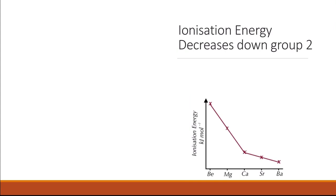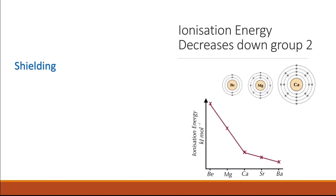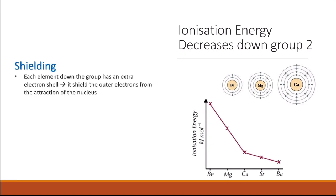Looking at the ionization energy across Group 2 elements, you can see that the first ionization energy decreases down Group 2. This is because of shielding. When you look at the electronic configuration of different elements in Group 2, as you go down the group, each element will have an extra electron shell. So the outer shell electrons will be shielded from the attraction of the nucleus. Going from beryllium to magnesium to calcium, there is an extra inner shell, so there is extra shielding.